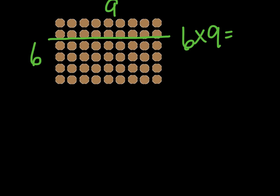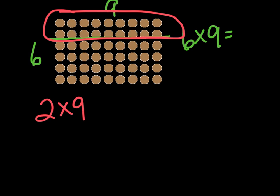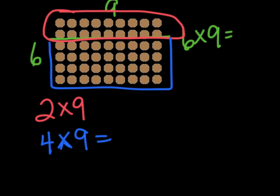So now if I look at just this part, what's my multiplication problem for that? Two groups of nine. Okay. And then I have this part left. So what's my multiplication problem there? Four groups of nine. And then now those problems I can solve. I know how to count by twos. I know how to count by fours. So go ahead and solve those.